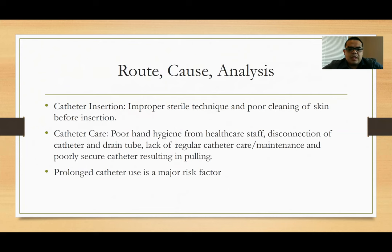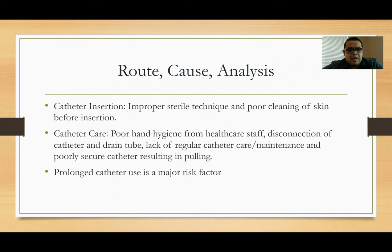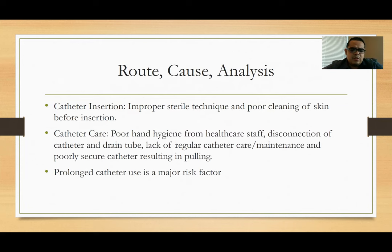Root cause analysis. Catheter insertions due to improper sterile technique and poor cleaning of the skin before insertion can cause UTIs. Catheter care issues such as poor hygiene from healthcare staff, disconnection of catheter and drain tubes, lack of regular catheter care maintenance, and poorly secured catheters resulting in pooling can also be linked to catheter-associated infections. But most importantly, prolonged catheter use is a major risk.